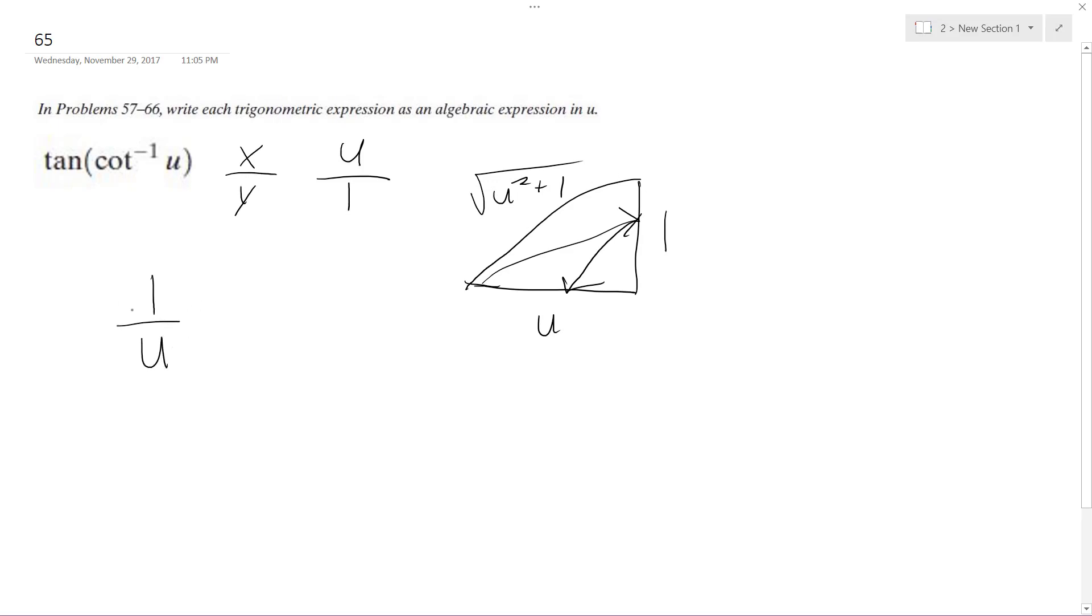And when you took the arc, so this is the answer, but let me explain. So the inverse cotangent, when you take the u, you get this radial value. Whatever this is, it's arbitrary because it's just u.